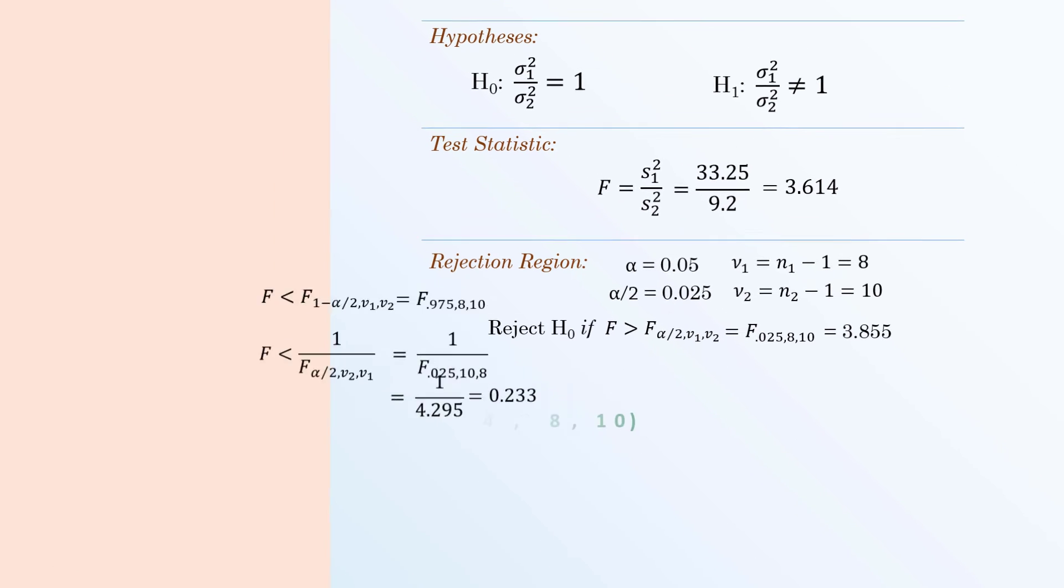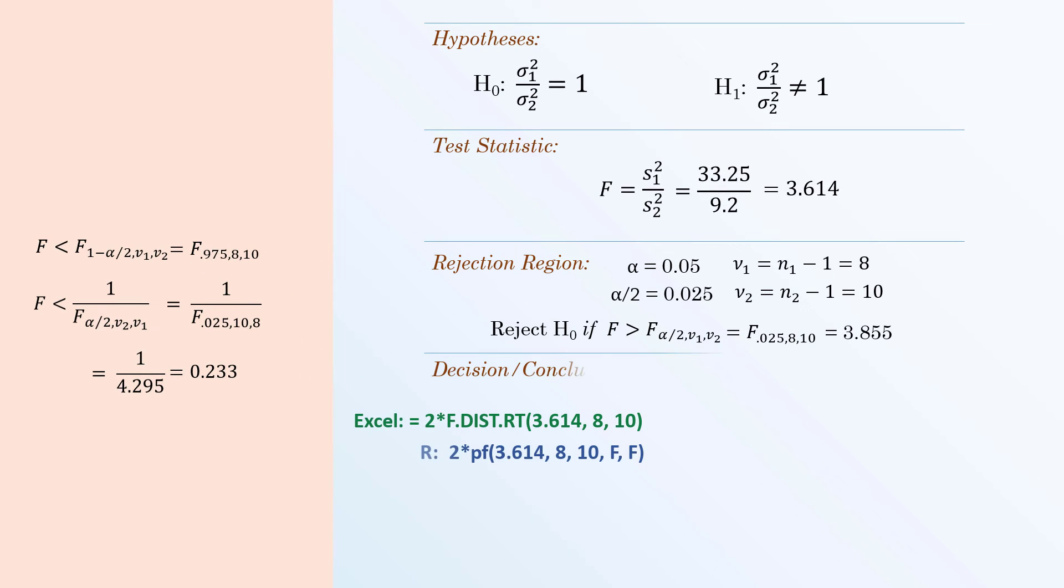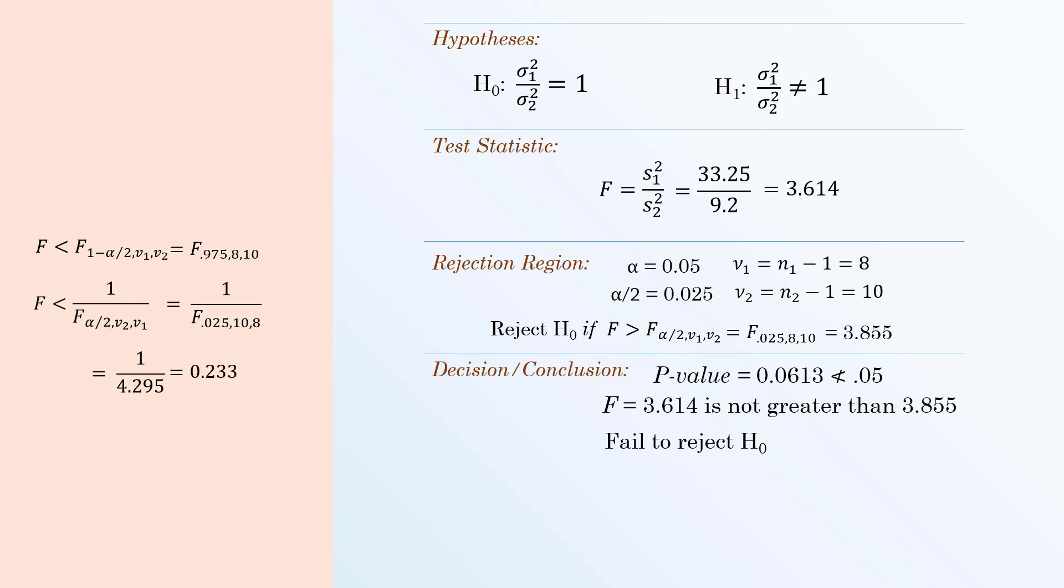Using software, the two-tailed p-value is calculated as 0.0613. Since this p-value is not less than alpha, or since the F-statistic is not greater than the critical value, we fail to reject the null hypothesis, and we say we don't have enough evidence that the population variances are different at alpha equals 0.05.